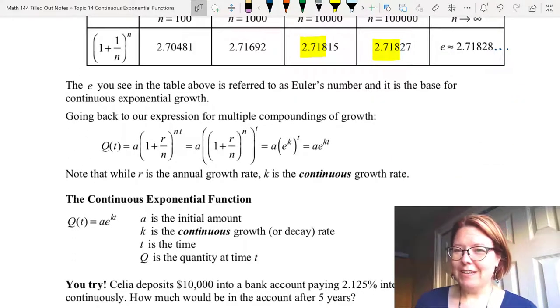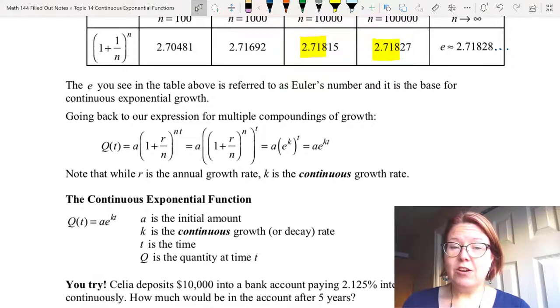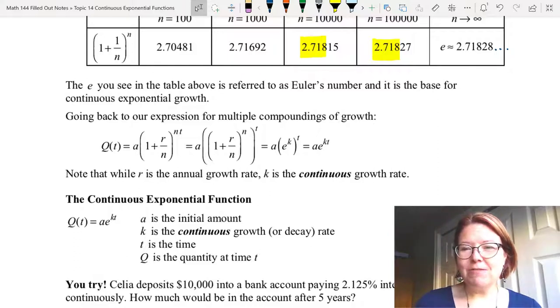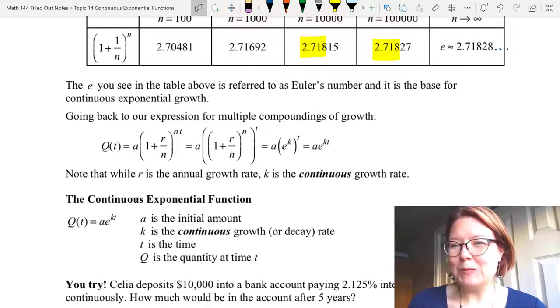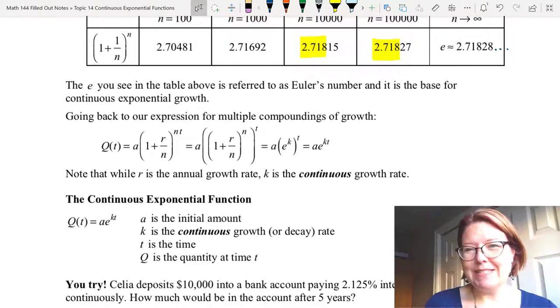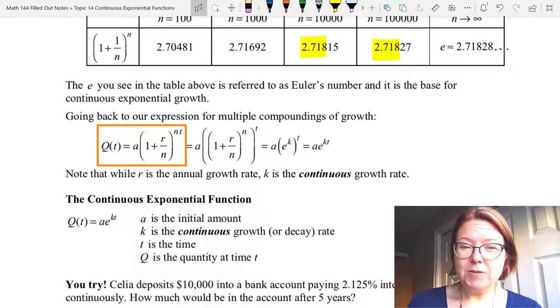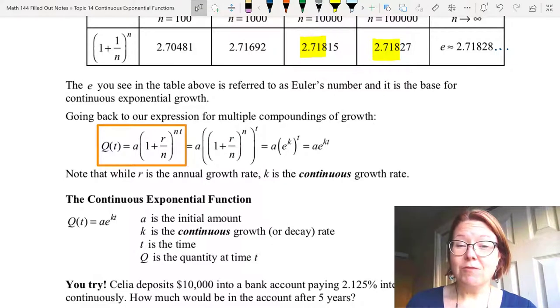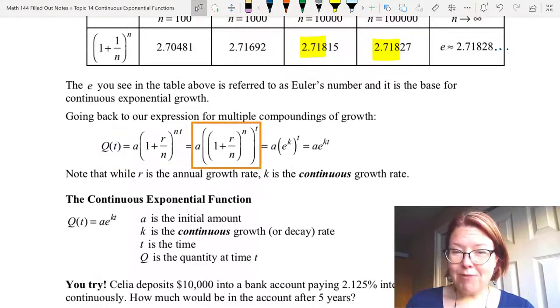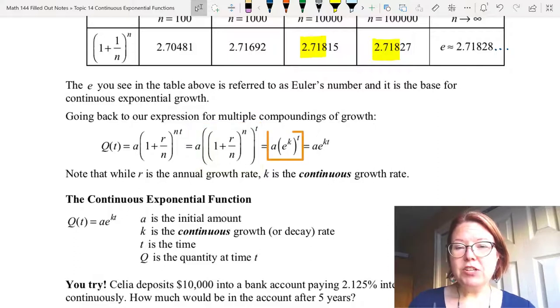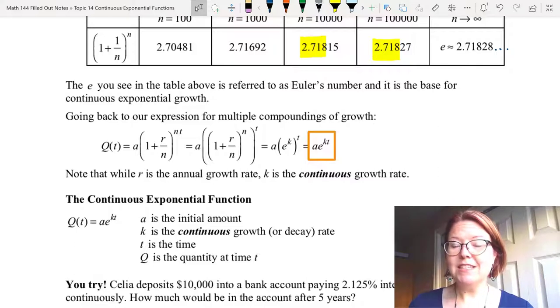Euler's number, or what we call the base for continuous exponential growth, that letter e, allows us to rewrite our expression for multiple compoundings of growth as an expression for continuous growth. In other words, compounding as often as you possibly can until you run into that limit that happens in growth. We take Q of t equals a times (1 plus r over n) raised to the nt, rewrite it so that (1 plus r over n) to the n is sitting inside another set of parentheses to the t, and then replace this with e to the k. That's lowercase e to the lowercase k raised to the t power.